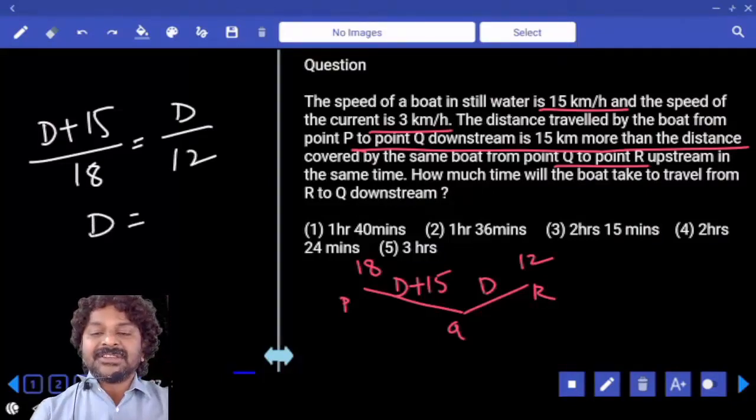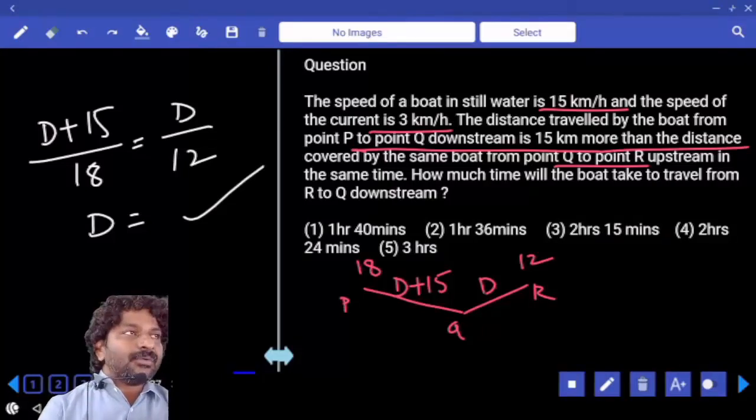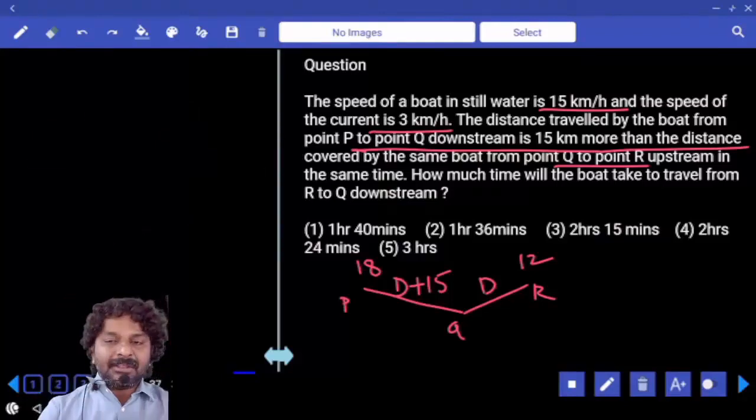Finally, we were asked to calculate R to Q downstream. This is one way to calculate D value, but there is another way. Let me tell you one thing.